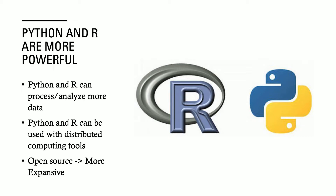Python and R are more powerful programming languages. They can process and analyze more data. If you're dealing with terabytes of data, Excel won't be helpful for you — you would need to use something like Amazon or Python. Another advantage of Python and R is they have much better integration, especially when it comes to distributed computing tools. VBA is only for use within Microsoft Office applications, which we'll talk more about shortly, but this is a very large drawback for VBA. If you want to use Hadoop, MapReduce, Elastic MapReduce, or something in AWS like SageMaker, then VBA would not be helpful at all.